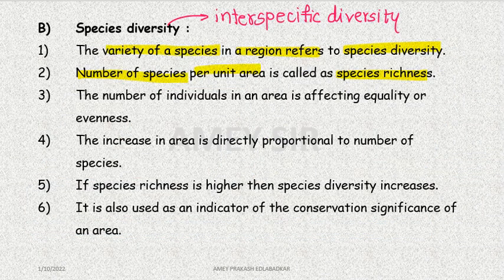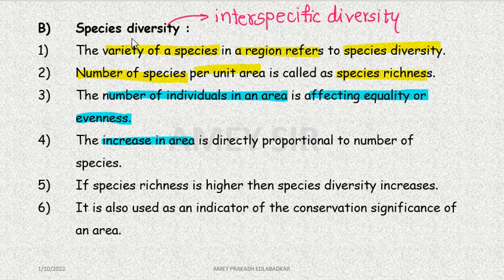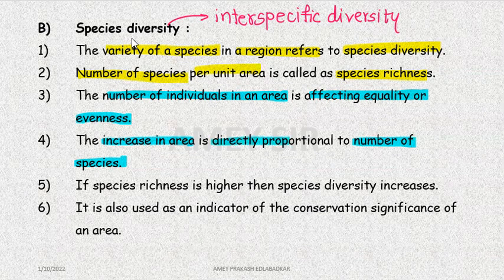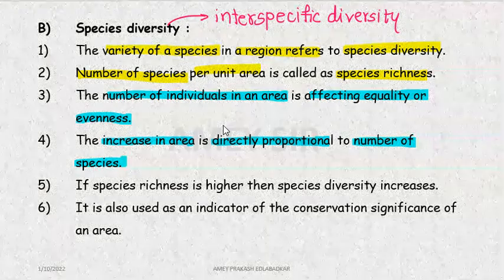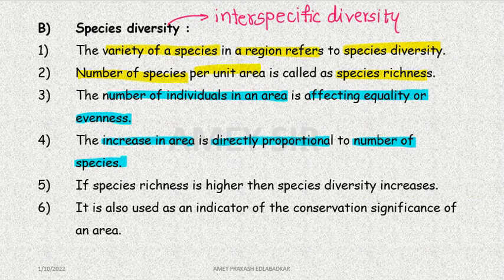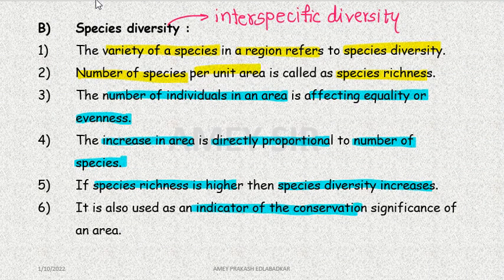The number of species in an area affects equality or evenness. We increase species richness and this is directly proportional to diversity. If you remember, in practicals we use the quadrant method for this — to study species richness and evenness. We use this as an indicator of the conservation significance of an area.